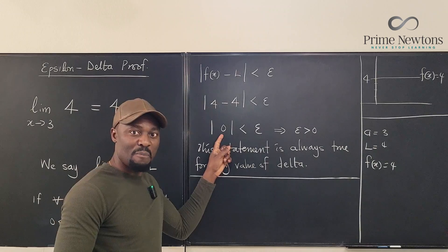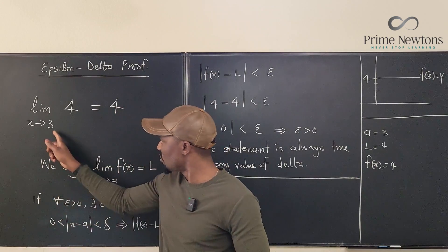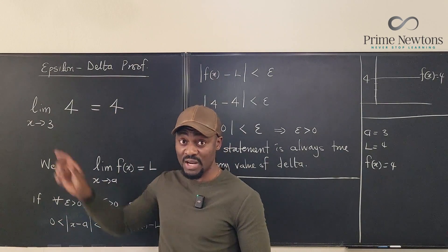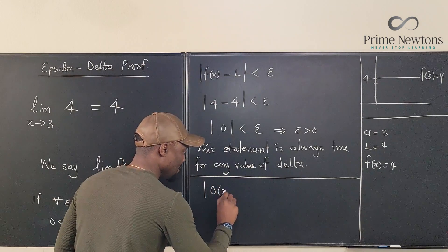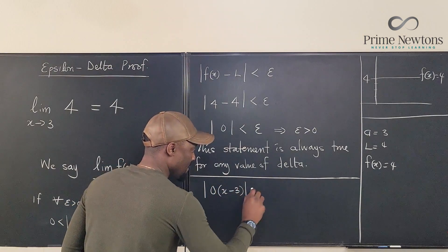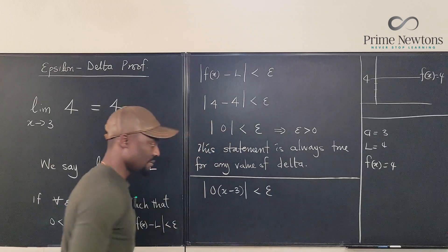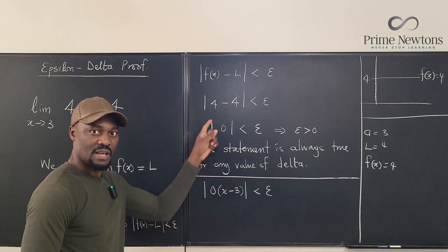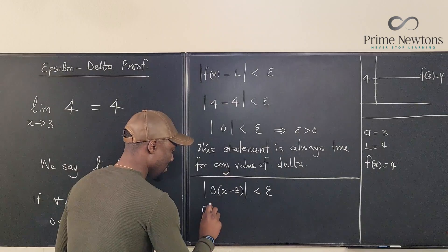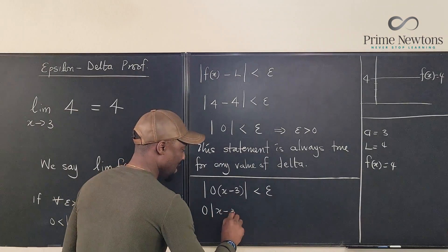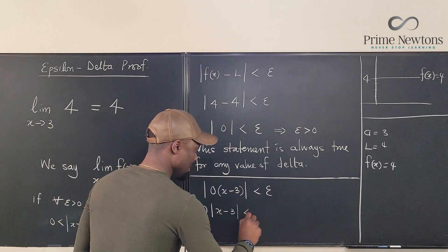This is 0, but because I want to show something in relation to x, to the point 3, I can write this as the absolute value of 0 times (x minus 3) is less than epsilon. This and this are still the same thing. Watch what I do. I'm going to pull the 0 out. This is 0 times absolute value of (x minus 3) is less than epsilon.